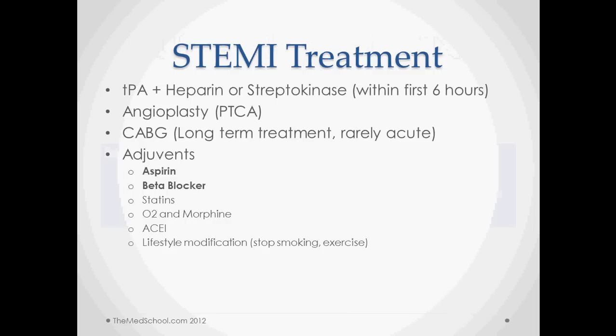If we have a confirmed STEMI and get to it within the first six hours, we'll want to use thrombolytics like tPA or streptokinase — if giving tPA, give heparin as well. Angioplasty is also a preferred method of treating ST elevation MI. Coronary artery bypass graft isn't going to help in the acute setting but may be a good long-term treatment to prevent future MIs. Give aspirin and a beta blocker definitely.